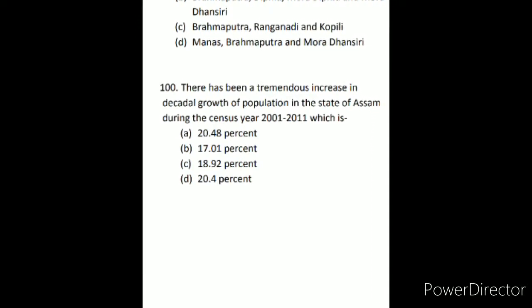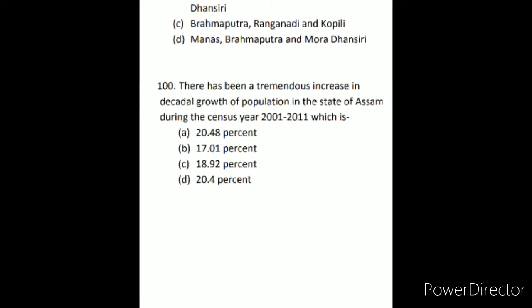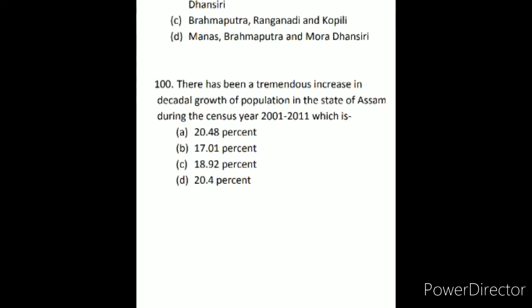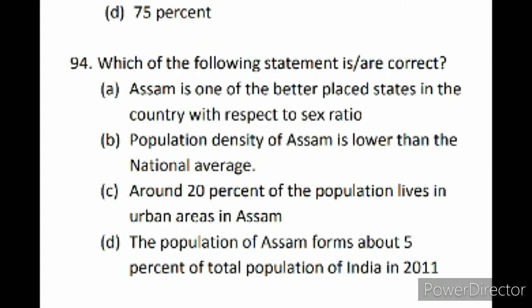The next question asks about the decadal growth from 2001 to 2011. The correct answer is 17.01 percent. In a statement-based question: the population of Assam forms about five percent of total population of India — this is not correct, it is about 2.6 percent. Around 20 percent of the population lives in urban areas in Assam — also not correct, because 86 percent live in rural areas. The population density of Assam is lower than the national average — also wrong, because Assam's density is about 398 per square kilometer while the national average is 382. So the answer is option A.